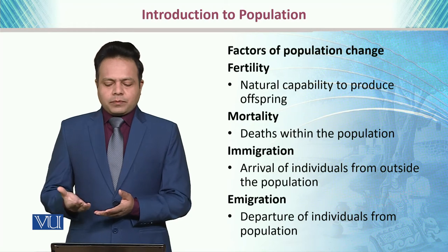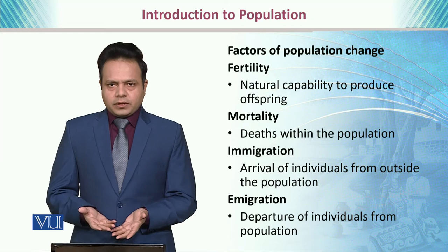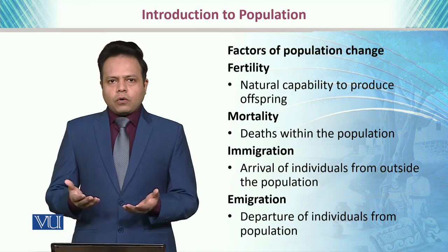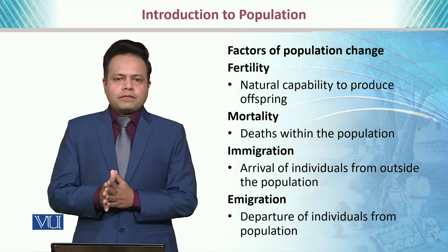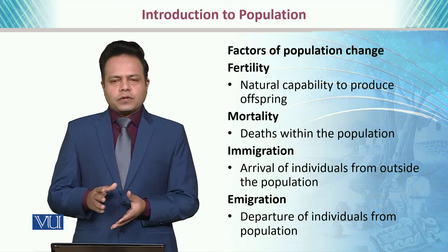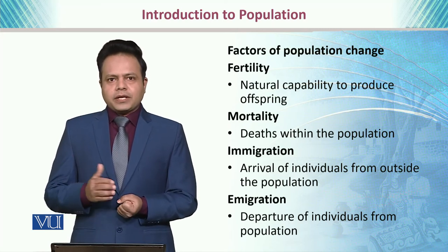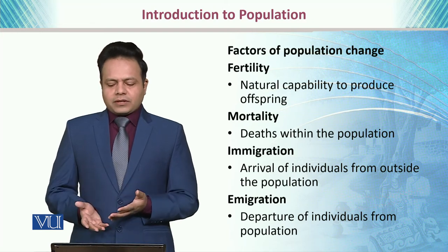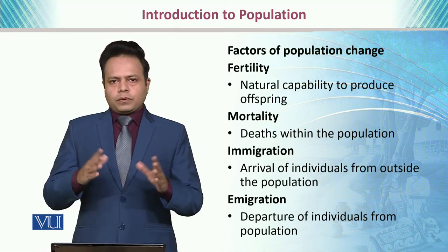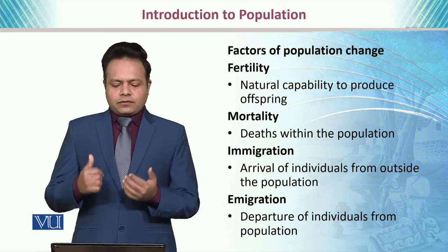Fertility means the natural capability of an individual to produce offspring. It is usually calculated for females; fertile ages are typically between 15 to 40 years. Mortality is another indicator — it means the number of deaths within a specific population. To calculate the total population, we have to take into account both the fertility rate and the mortality rate.